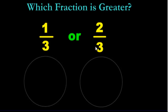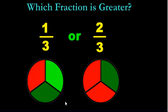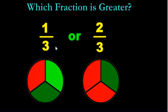Which fraction is greater — one third or two thirds? One third has one red selection out of three altogether. Two thirds has two red pieces out of three altogether. Which is more? Of course two thirds, because it takes up more space — see how it's more red? If this was pizza or pie or cake, this person ate more and this person ate less. So two thirds is more than one third.